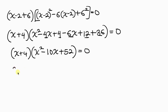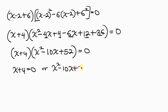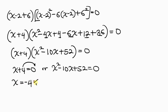There are two cases: x plus 4 equal to 0, or x squared minus 10x plus 52 equal to 0. From the first case, moving plus 4 to the right gives x equal to negative 4. This is another real solution — the fourth solution so far.